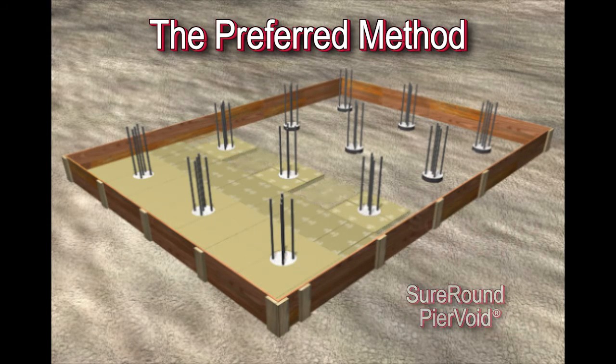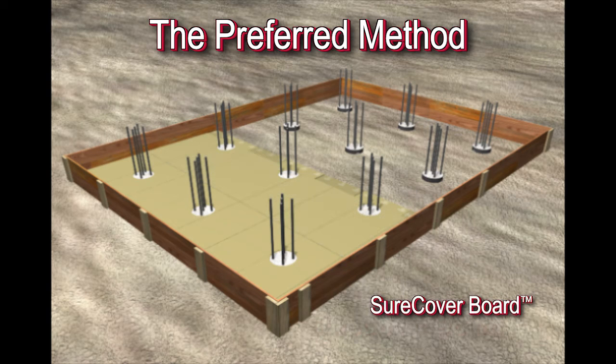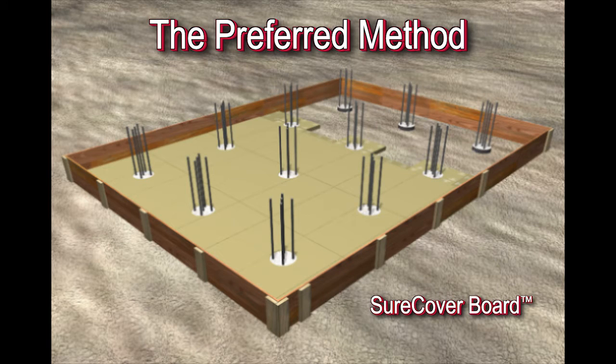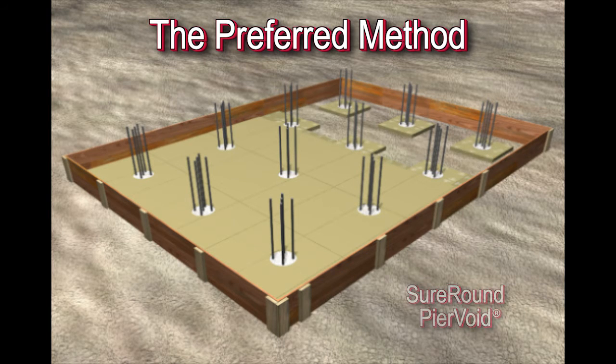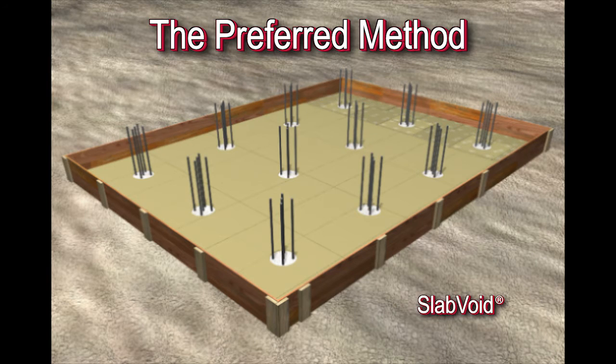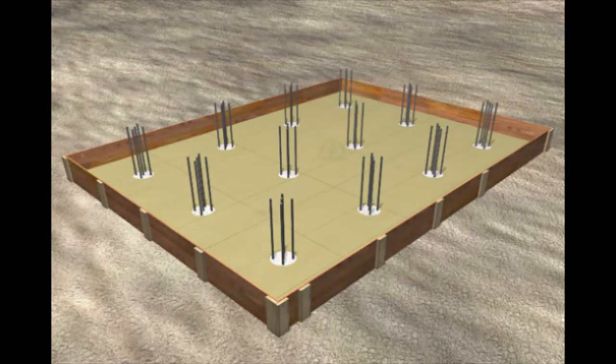Surround Piervoid, Slabvoid, Sure Cover Board. This repetitive procedure ensures protection for the entire Slabvoid surface.